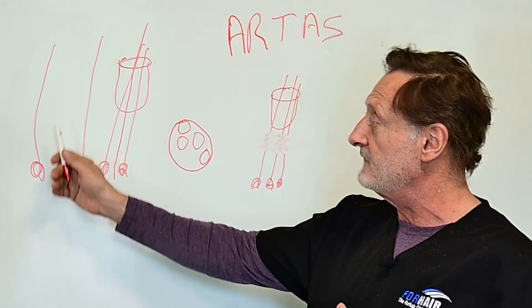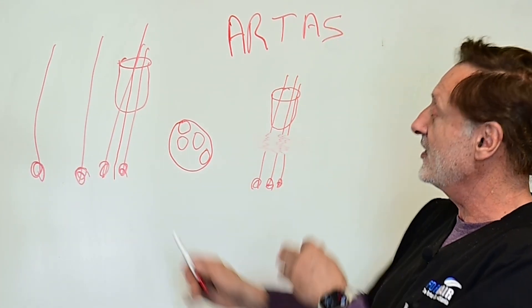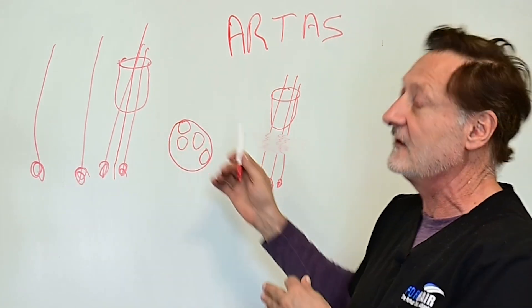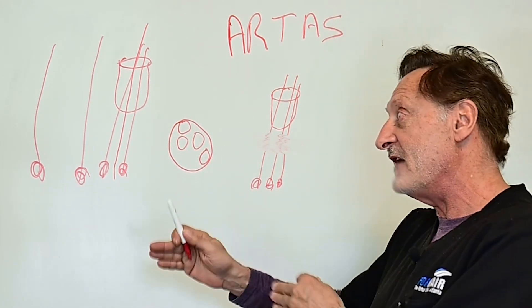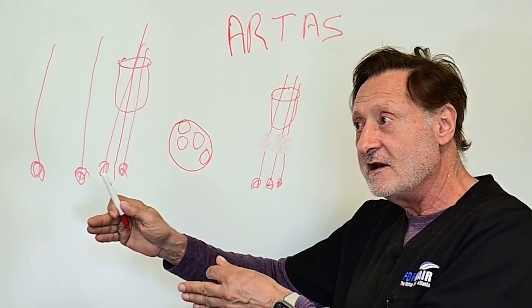Why do they do that? Because ARTAS is going to charge them for this graft and you're going to pay for this graft, but ARTAS doesn't get anything for it. You're going to pay for two grafts, they're going to pay ARTAS for one, and you're paying double for it.